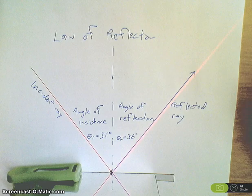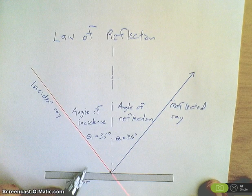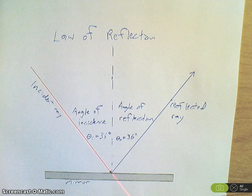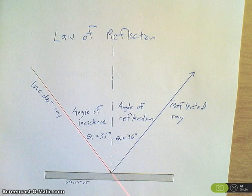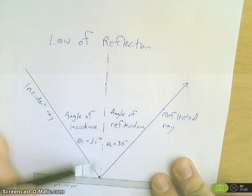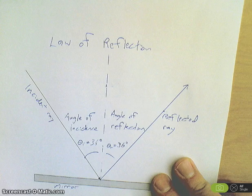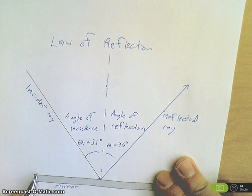Now, while it's true that this angle and this angle are the same, when we start doing refraction, you can't measure it relative to the surface. Everything should always be measured relative to the normal. So, your angles, you want to be measuring this angle and this angle. Always relative to the line perpendicular to the surface.